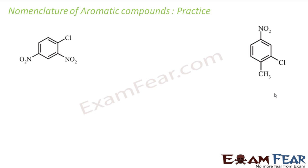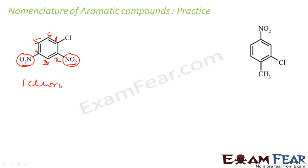Let's check this example. We have a nitrobenzene ring — nitro is the primary functional group — and there is a chlorine substituent. Let me number the ring: giving chlorine position 1, we get positions 1, 2, 3, 4, 5, 6. So this becomes 1-chloro-2,4-dinitrobenzene.